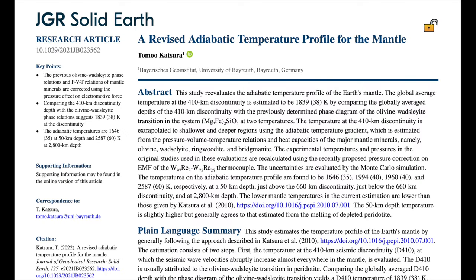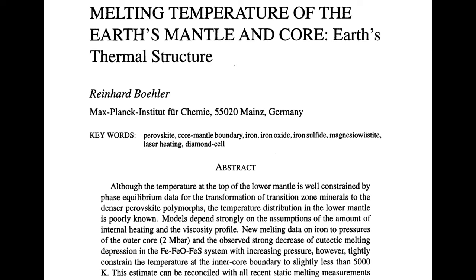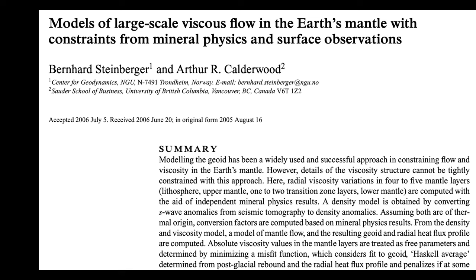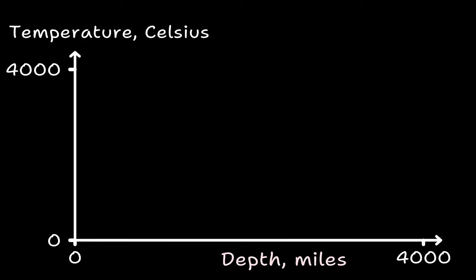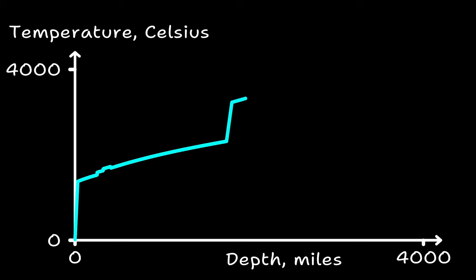Now let's look at temperature. The paper, A Revised Adiabatic Temperature Profile for the Mantle by Katsura 2022, gives temperatures down to 1,700 miles. I'll also add in some data for deeper in the earth from Melting Temperature of the Earth's Mantle and Core by Bourla 2023, and Models of Large-Scale Viscous Flow in the Earth's Mantle by Steinberger and Calderwood 2005.